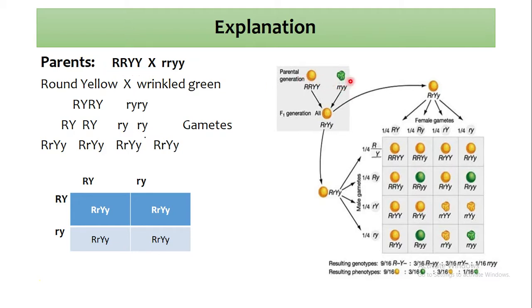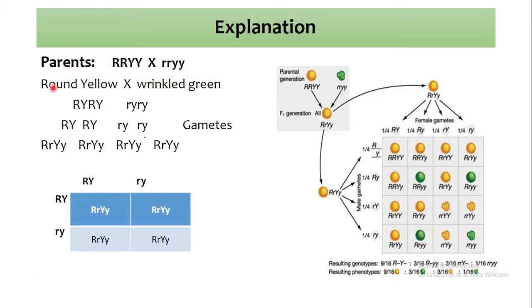These are the parents: one parent contains RR YY, which are homozygous dominant characters — RR for rounded shape and YY capital for yellow color. The second parent is rr yy, which is recessive — small r means wrinkled shape and small y means green color.